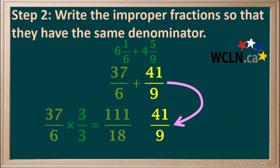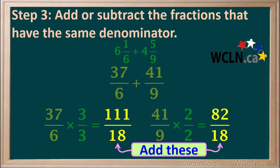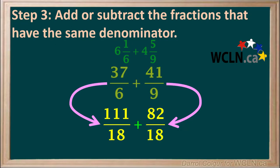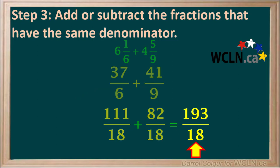Now we write 41 over 9 with a denominator of 18 by multiplying both the numerator and denominator by 2, giving us 82 over 18. Step 3 is to add the fractions with the same denominator. So we add 111 over 18 plus 82 over 18, which gives us 193 over 18.